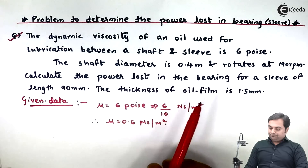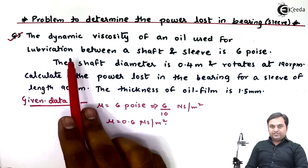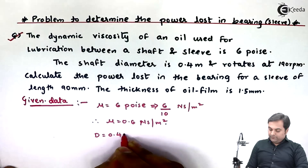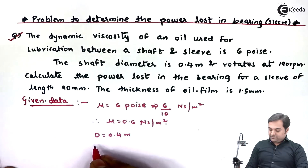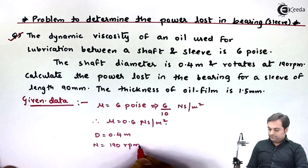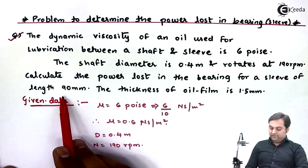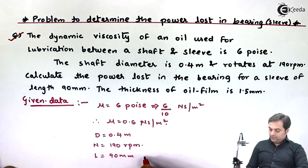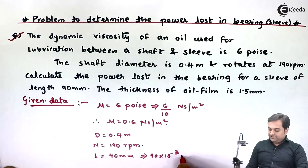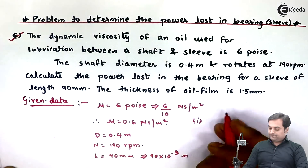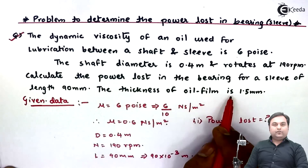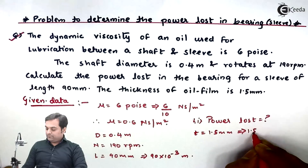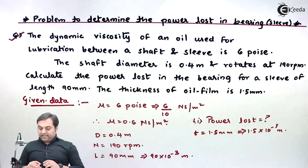The shaft diameter is 0.4 meter, written as capital D equals 0.4 meter, and it rotates at 190 rpm. The sleeve length is 90 mm, which is 90 into 10 raised to minus 3 meter. The thickness of the oil film, T, is 1.5 mm, which converts to 1.5 into 10 raised to minus 3 meter. Now everything is written in the form of data.